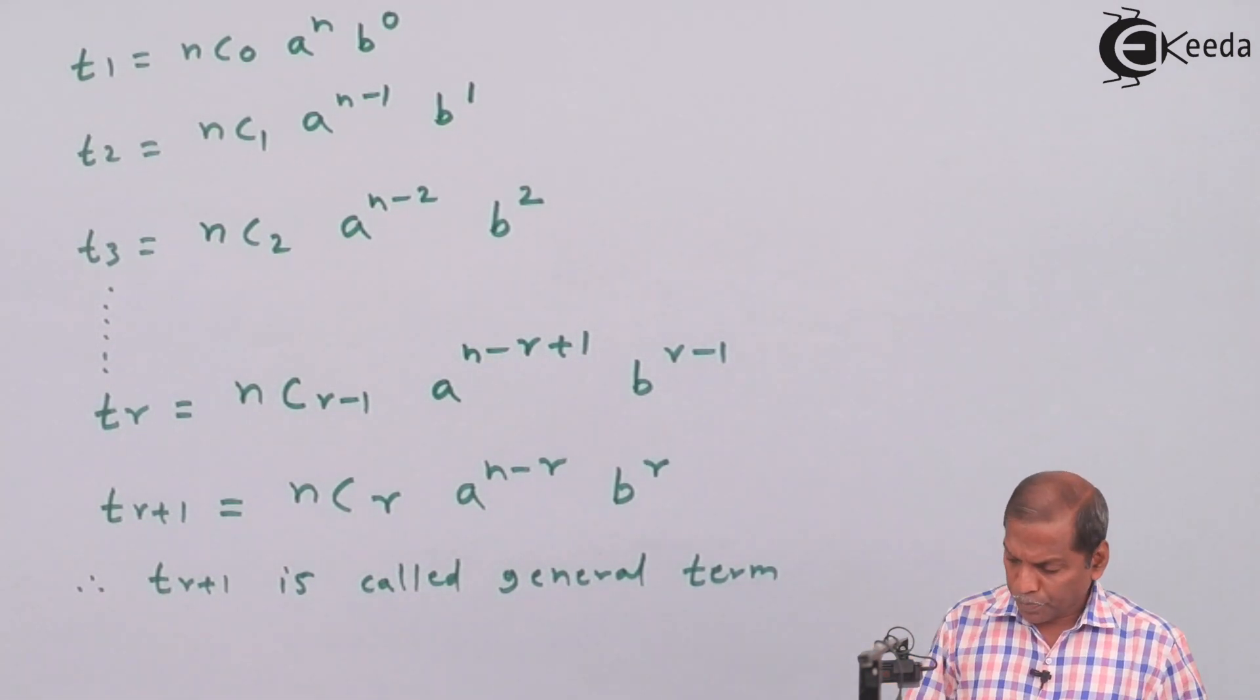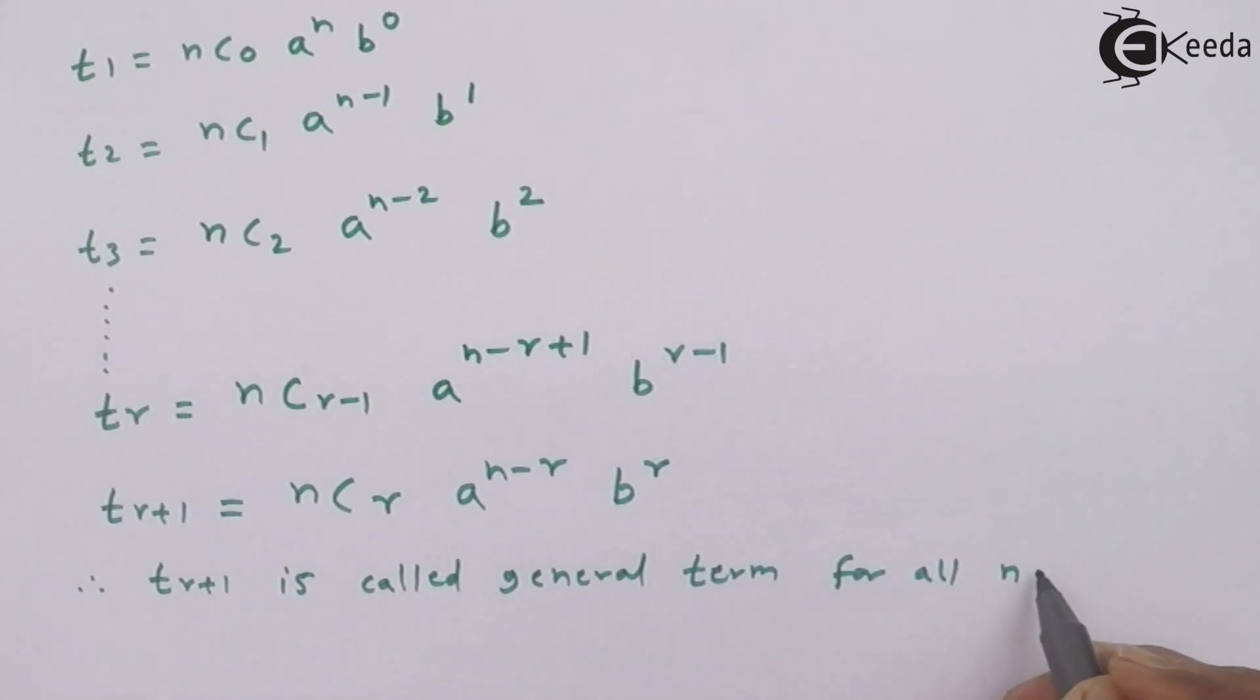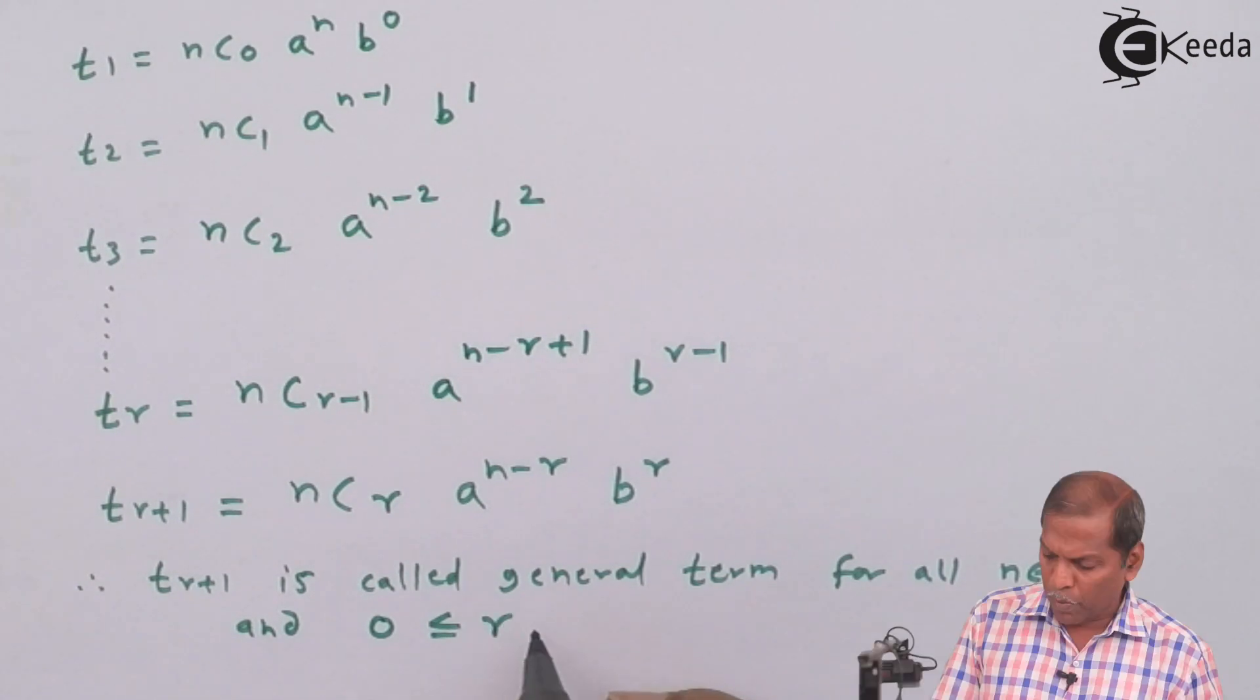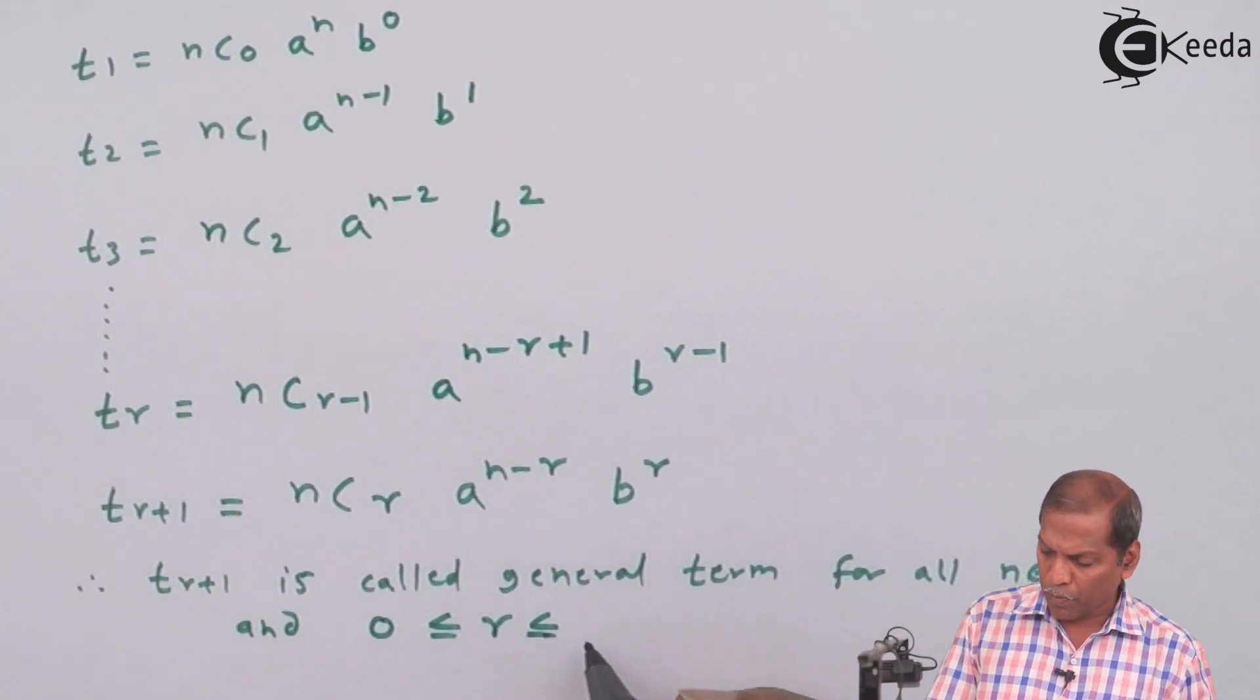For all n belongs to set of natural numbers and 0 less than or equal to r less than or equal to n.